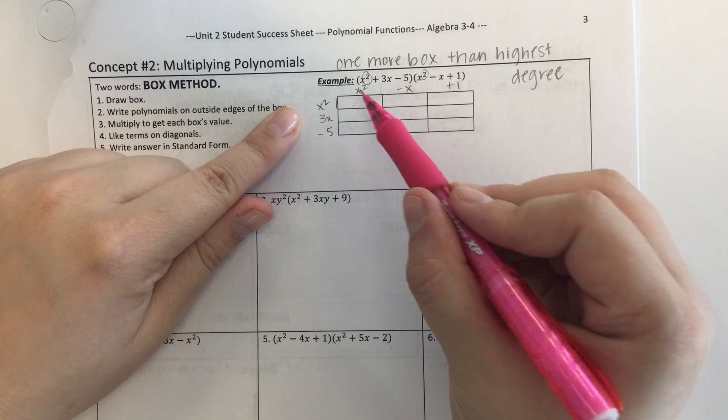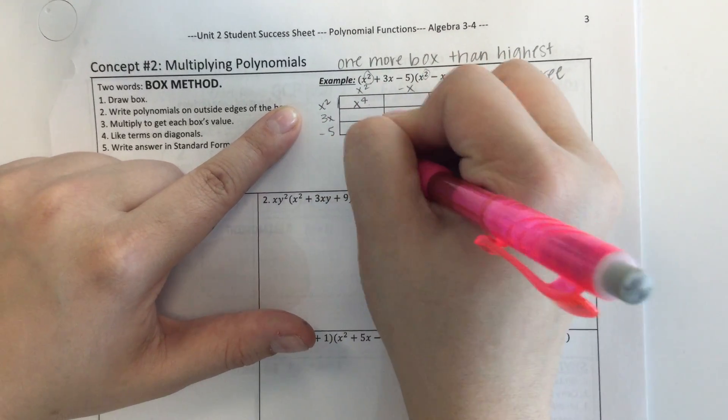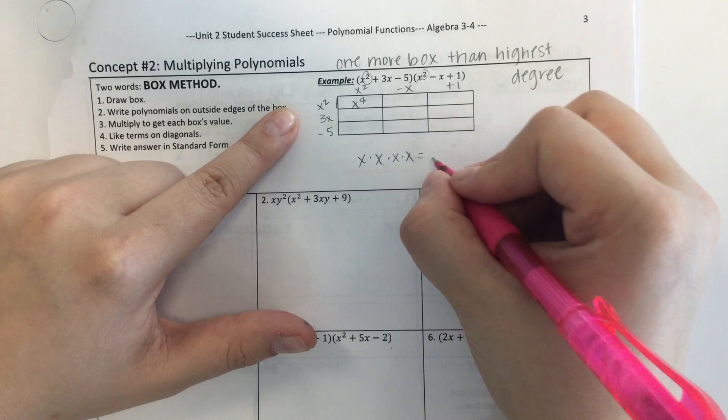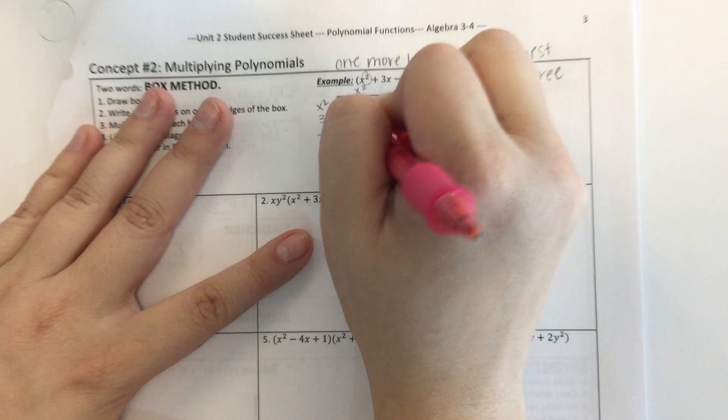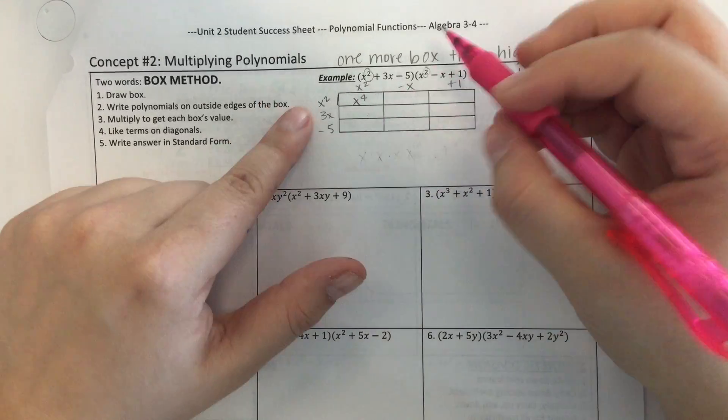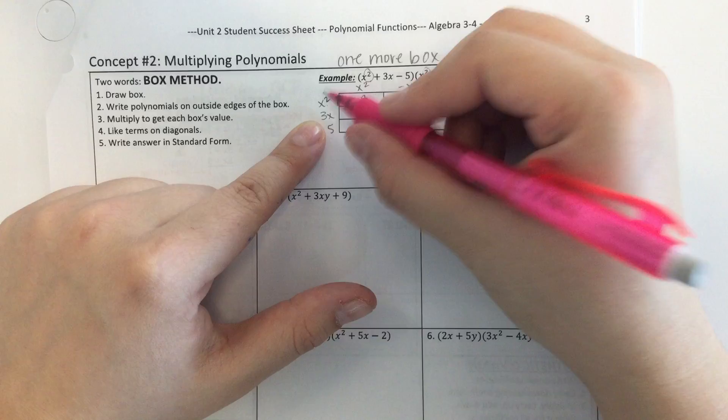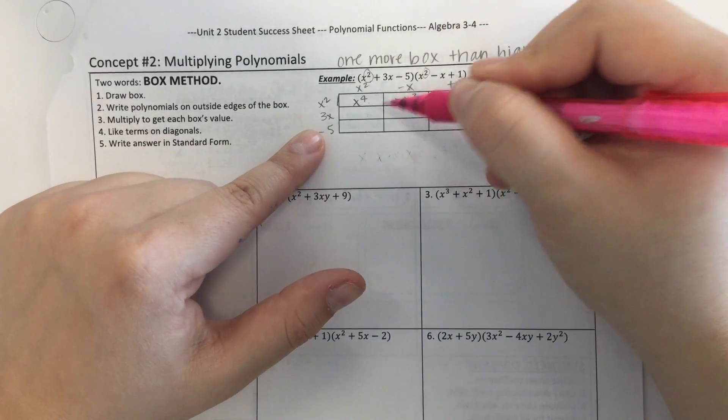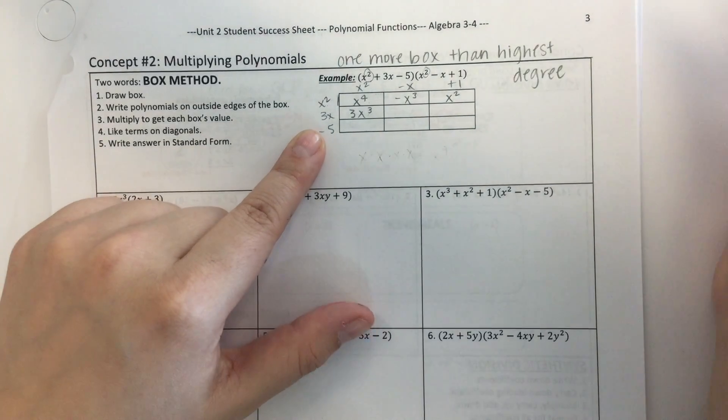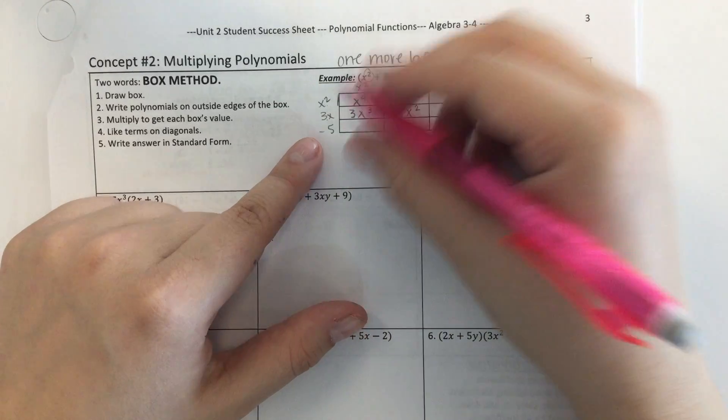We're going to multiply to get each box's value. This box in the top left has a width of x squared and a length of x squared. We're finding the area of each tiny little box, and then we're going to add them all together at the end. For this box, x squared times x squared is x to the fourth. x squared is like x times x. If I multiply that by another x squared, I have 1, 2, 3, 4 x's. That's what happens when you multiply x squared times x squared. You add the exponents. 3x times x squared is 3x to the third power.